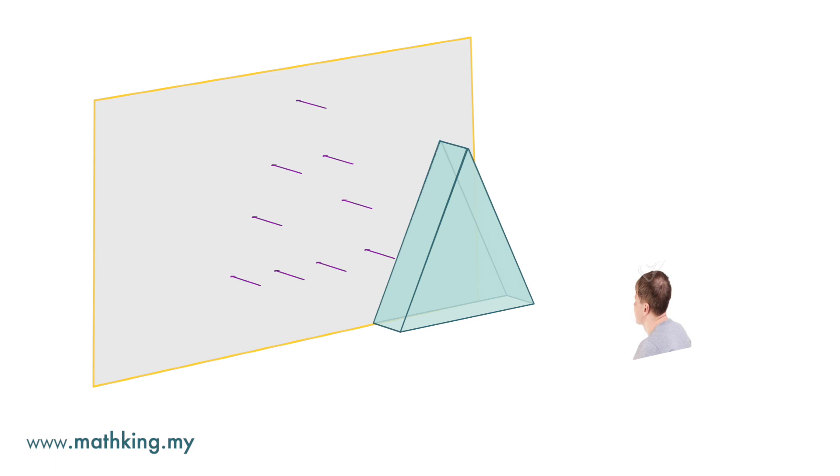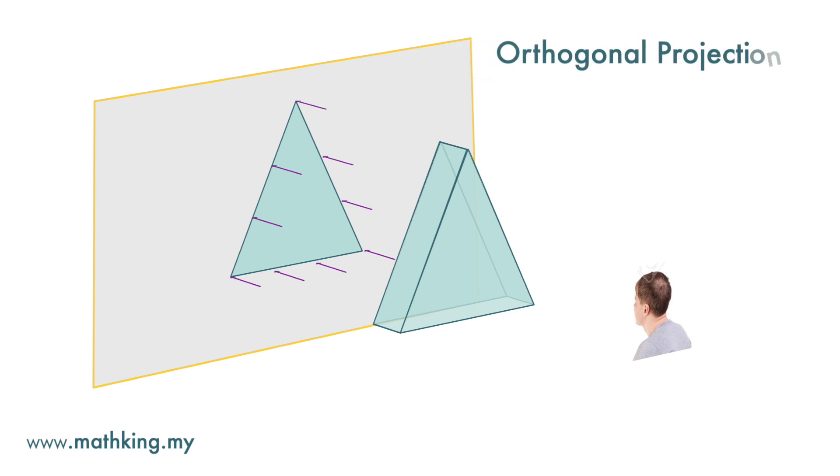they are going to leave an image on the plane. This image produced by the rays that are normal to the plane is called orthogonal projection.